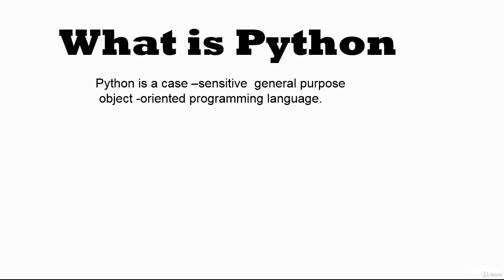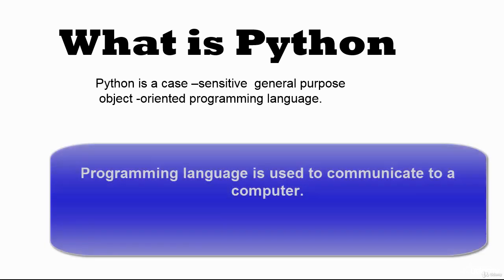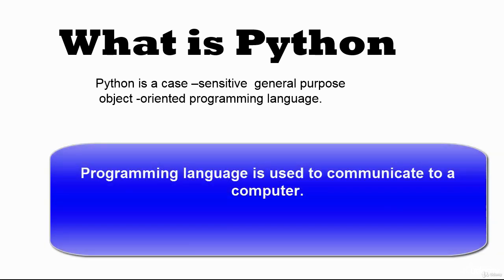A programming language is a language used to communicate with a computer. Computers respond to the commands you give them — you can make a computer as smart as you want. A programming language is just a set of instructions to tell the computer what to do. For example, if you want to bake bread, there are steps you take — computer programming is the same way.